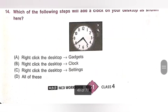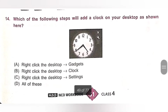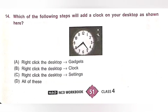Fourteenth: Which of the following steps will add a clock on your desktop, as shown here? Option A: Right click the desktop and select Gadget. Option B: Right click the desktop and click Clock. Option C: Right click the desktop, click Settings. Option D: All of these. To add a clock on your desktop, right click the desktop and select Gadget. Option A is the correct answer.